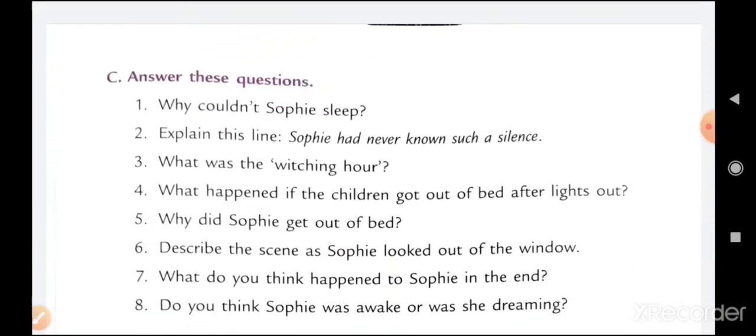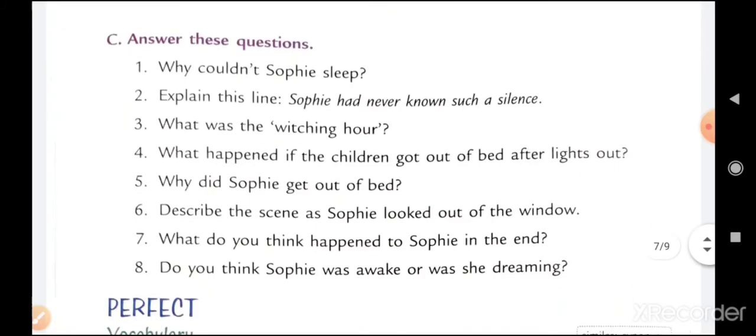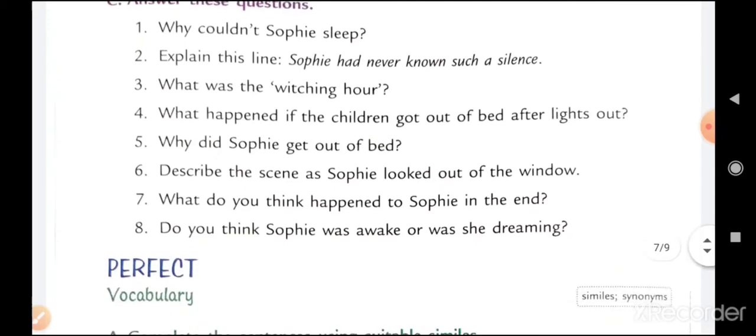Answer these questions. Why couldn't Sophie sleep? Explain this line: Sophie had never known such a silence. What was the witching hour? What happened if the children got out of bed after lights out? Why did Sophie get out of bed? Describe the scene as Sophie looked out of the window. What do you think happened to Sophie in the end? Do you think Sophie was awake or was she dreaming?